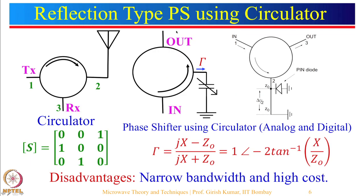A reflection type phase shifter can also be realized using a circulator. A circulator is a three-port device where the arrow direction is very important. One application — not directly related to the phase shifter concept but commonly used — is: a transmitter is connected to port 1, the signal goes to port 2 where an antenna transmits it. The signal received by the antenna comes to port 2 and, following the arrow direction, goes to port 3. At port 3 we connect a receiver, so a single antenna can be used as both a transmitter and a receiver.